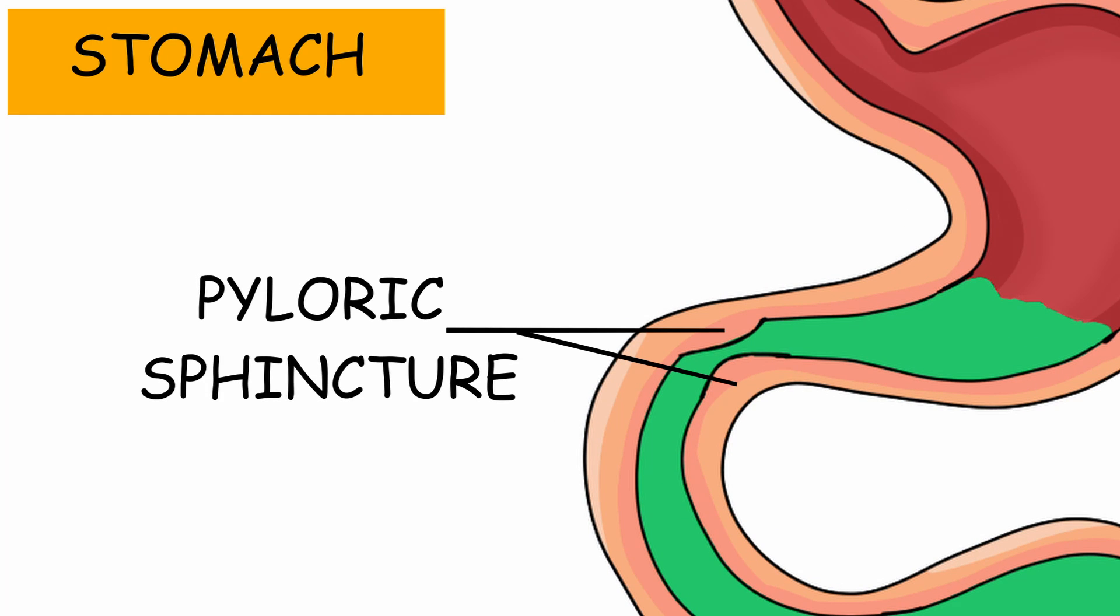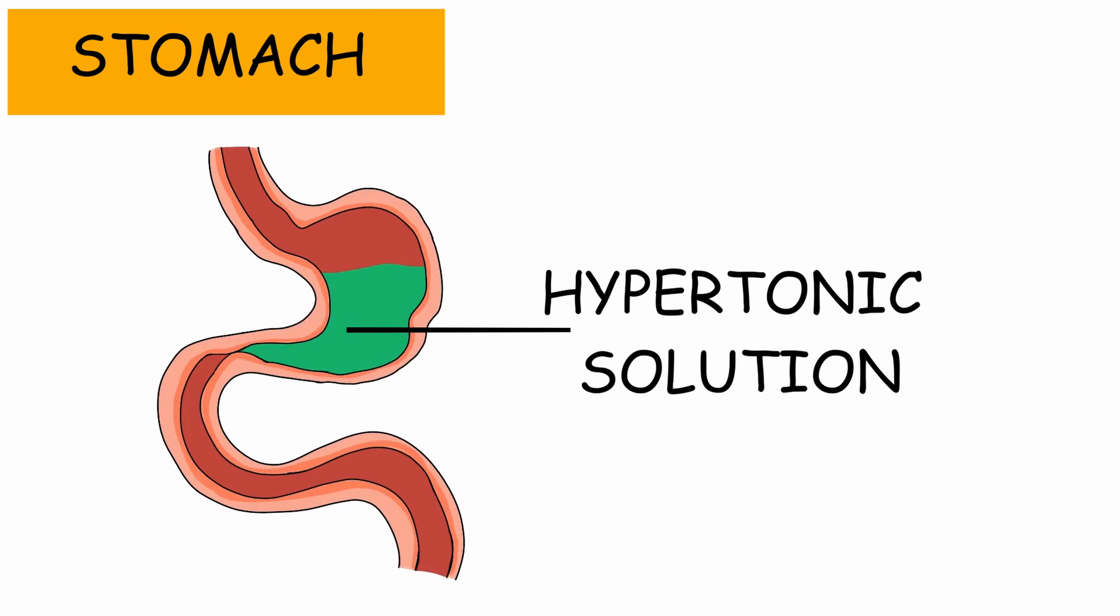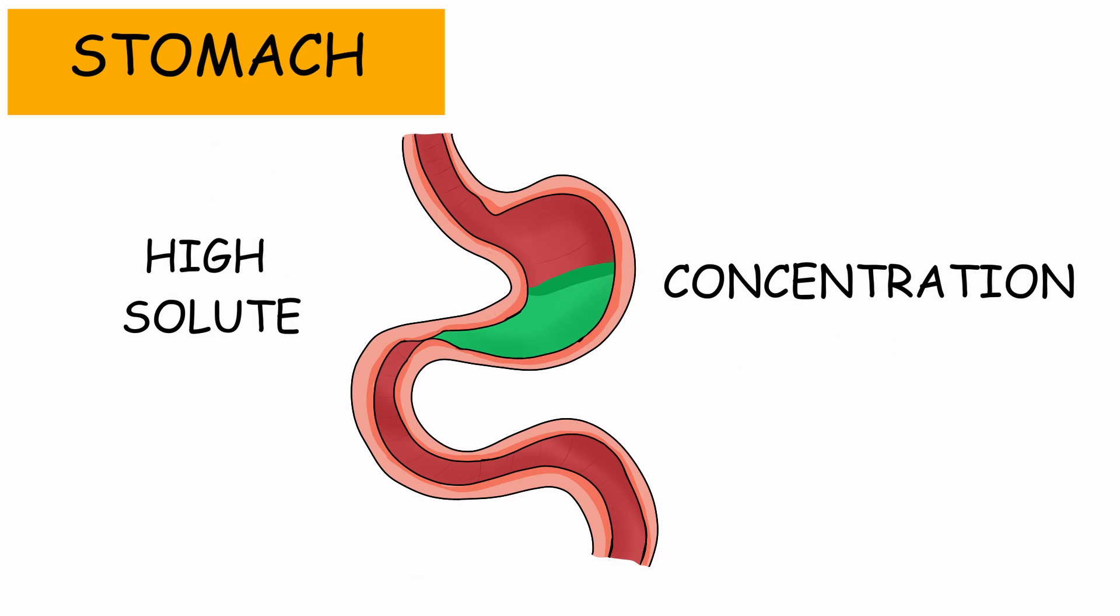The pyloric sphincter opens and allows for a small amount of chyme to pass into the duodenum of the small intestine. As the duodenum fills, it puts pressure on the pyloric sphincter, causing it to close. This process of slow secretion of chyme is crucial because chyme is a hypertonic solution, which means it has a high solute concentration.